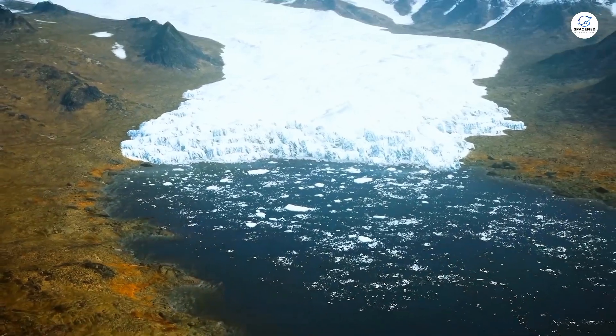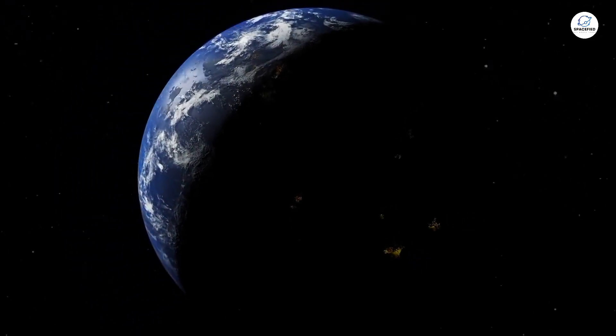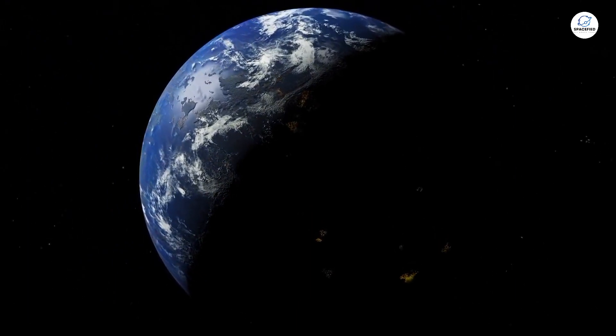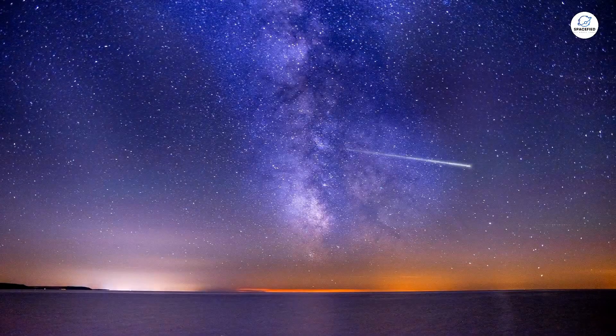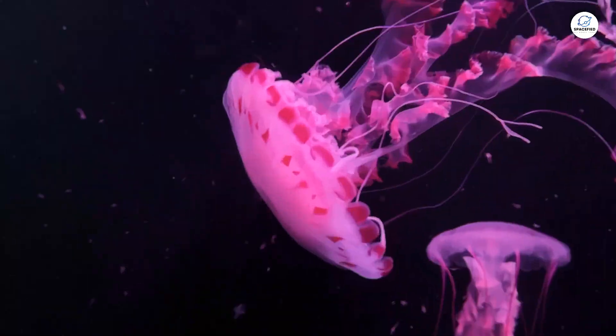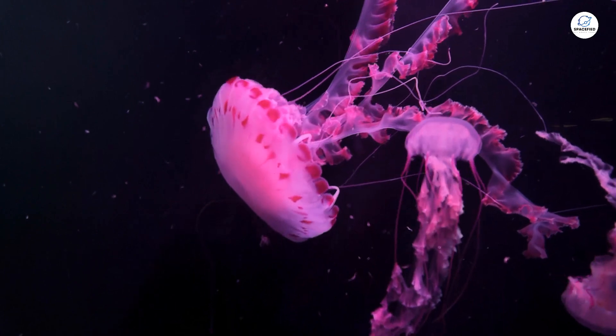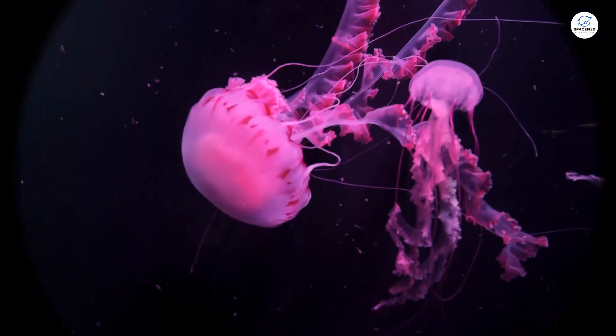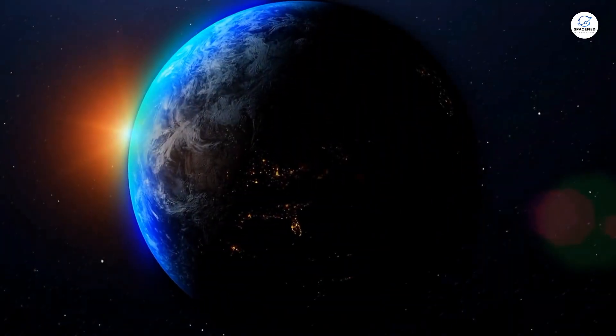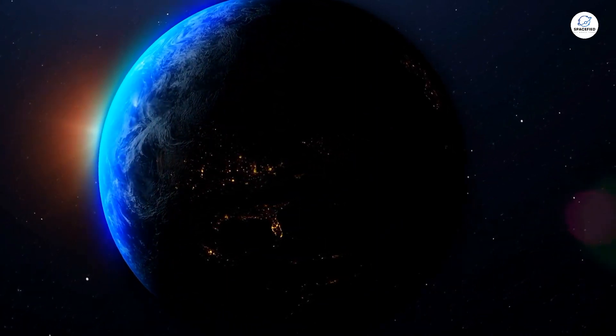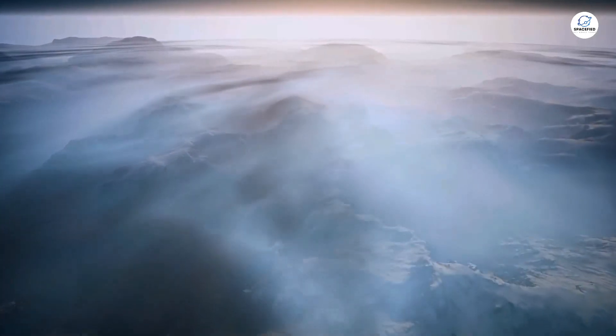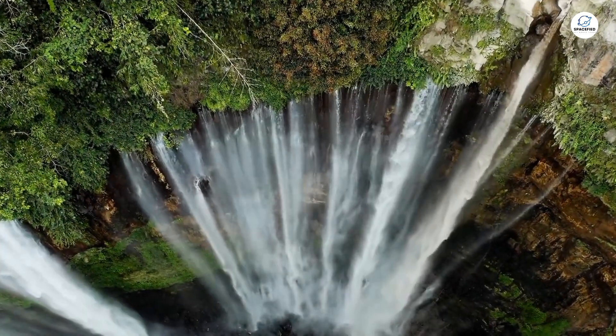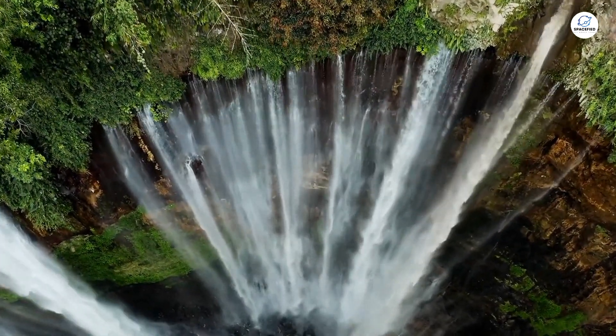But here's where things get even more interesting. Gliese 581g may not be Earth-like in every way, but that doesn't mean it can't support life. In fact, life on Earth itself has shown us that organisms can survive in extreme conditions, places where we once thought life was impossible. What if Gliese 581g is home to its own kind of extremophiles? Life that thrives in high levels of methane or can endure colder temperatures. It's entirely possible that life there could be unlike anything we've seen before.